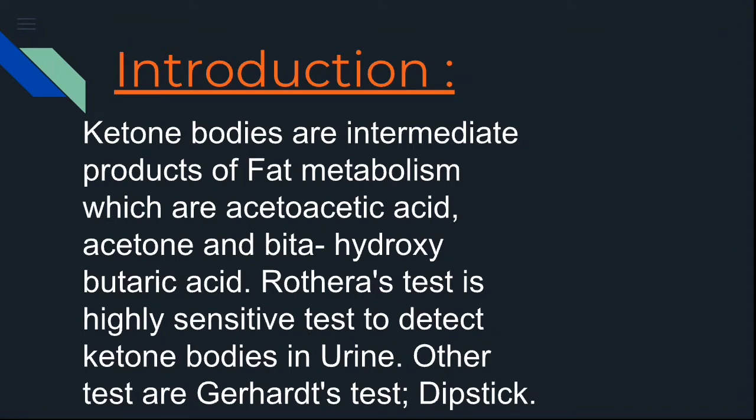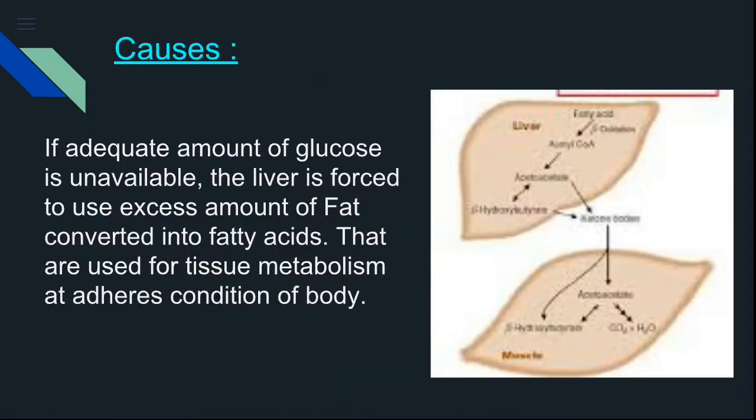Ketone bodies are the intermediate products of fat metabolism, which are acetoacetic acid, acetone, and beta-hydroxybutyric acid. Rothera's test is a highly sensitive test to detect ketone bodies — specifically acetoacetic acid and acetone — in urine. Other methods include the dipstick method, Gerhardt's test, etc.